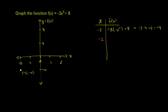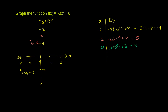When x is negative 1, f of x is negative 3 times negative 1 squared plus 8. Negative 1 squared is 1, so it's negative 3 plus 8, equal to 5. So we have the point negative 1, 5 on our graph. When x is 0, f of x is negative 3 times 0 squared plus 8 — that part is just 0 — so it equals 8, giving us the point 0, 8. When x is positive 1, it's negative 3 times 1 squared plus 8, which is again negative 3 plus 8, equal to 5. So that's the point 1, 5.